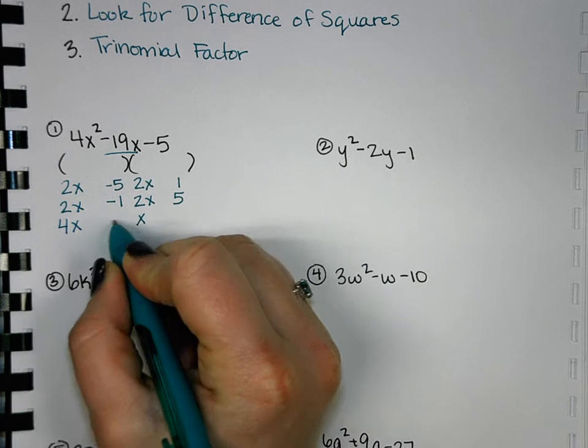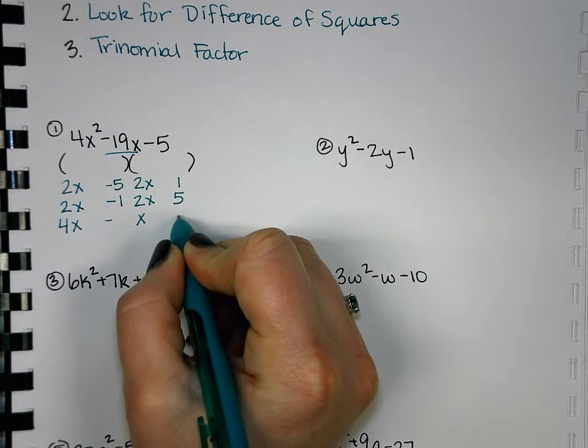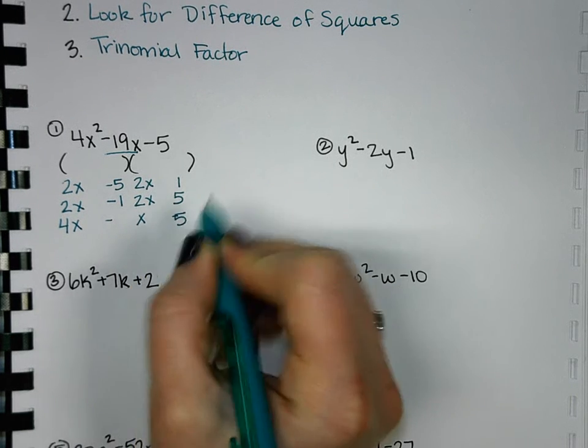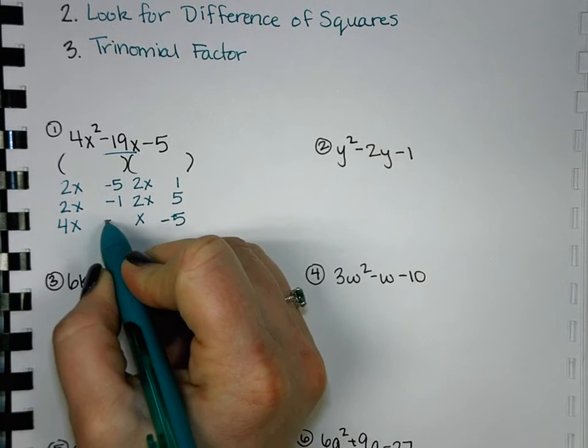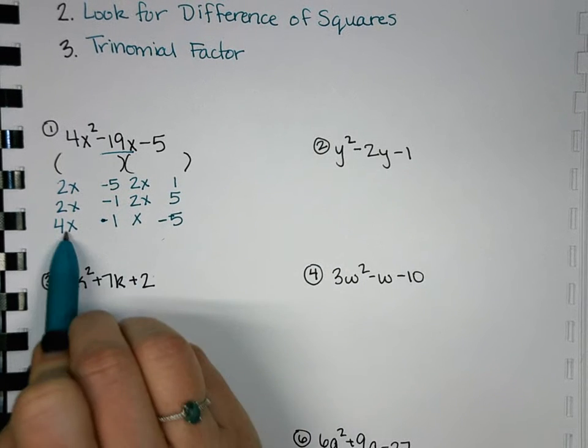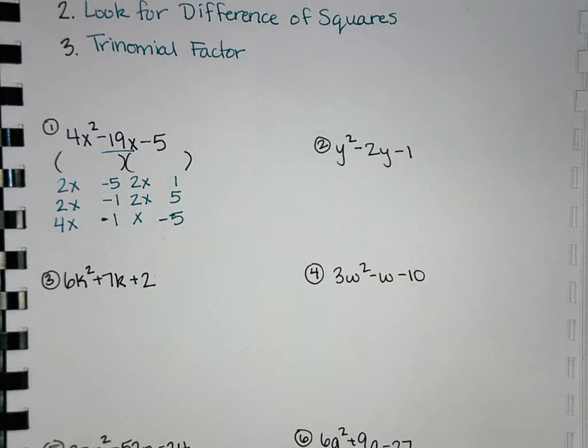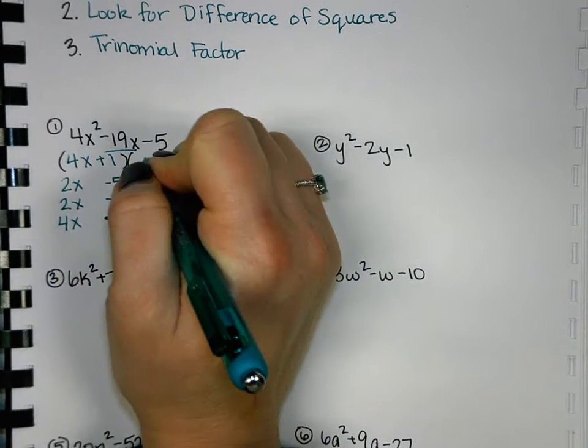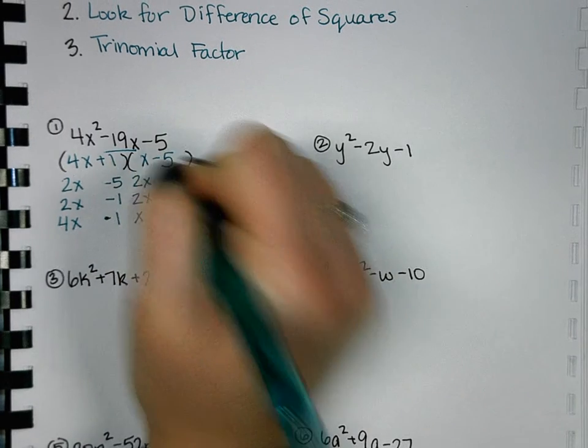Negative 5 on this side. And then positive 1. So negative 20 plus 1 gives us negative 19. So then we'd have 4x plus 1, x minus 5.